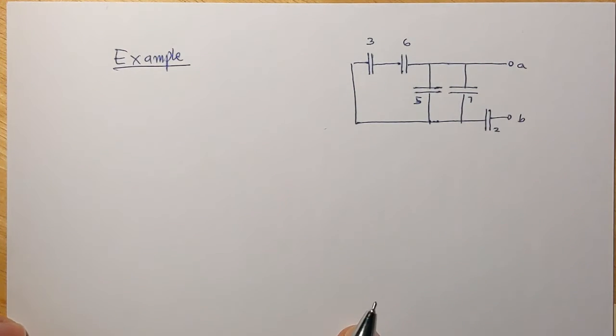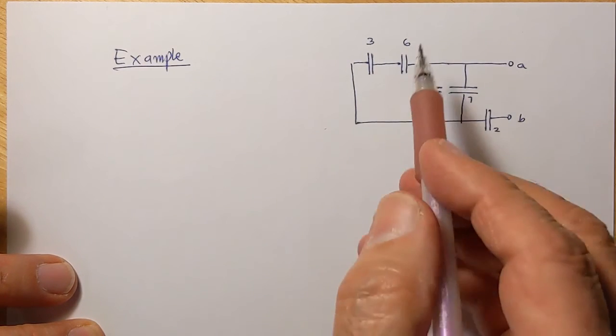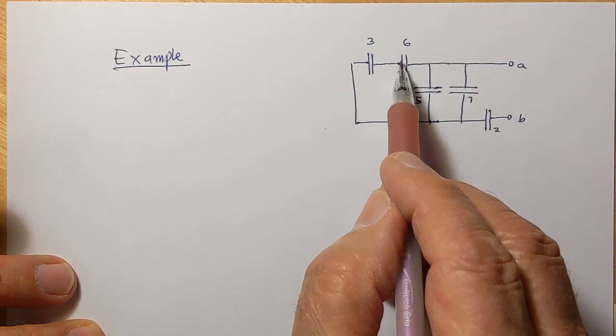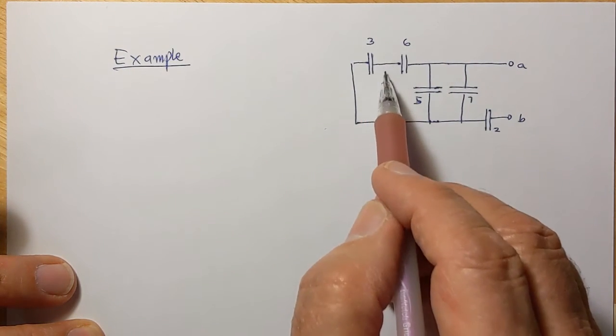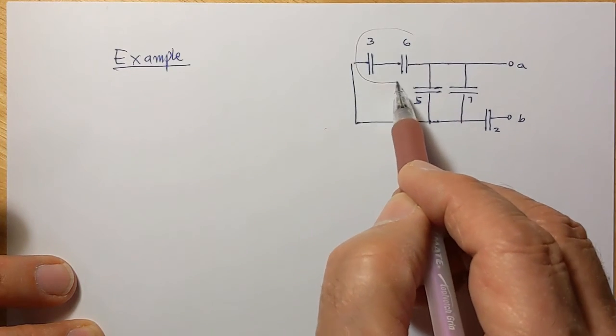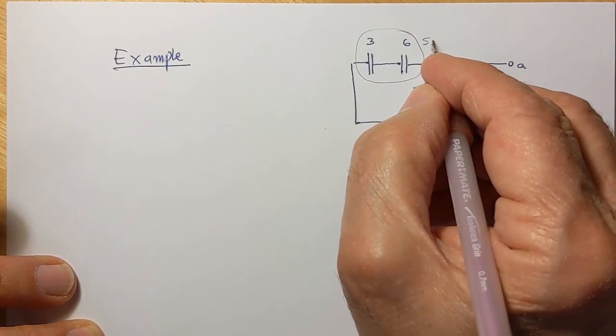So we first need to identify which capacitors are in series and which are in parallel. And we can see that the left side of this one is connected directly to the right side of this one without anything else in between. So these two are in series.